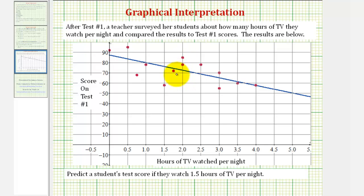For each point, the x-coordinate represents the number of hours of TV the student watched per night, and each y-coordinate represents the score on test number one.